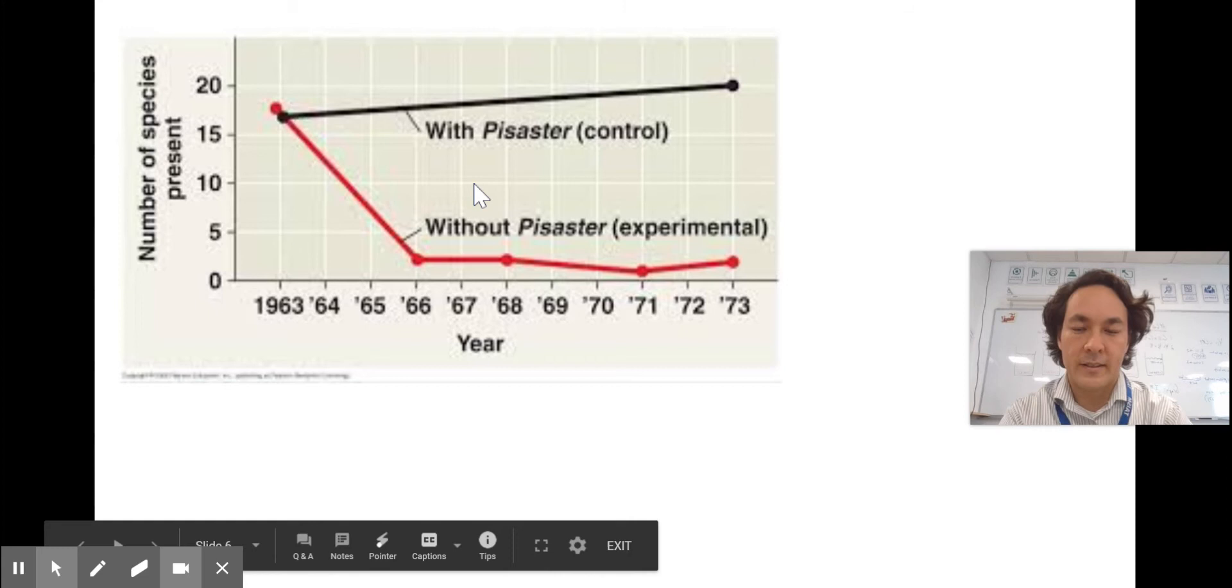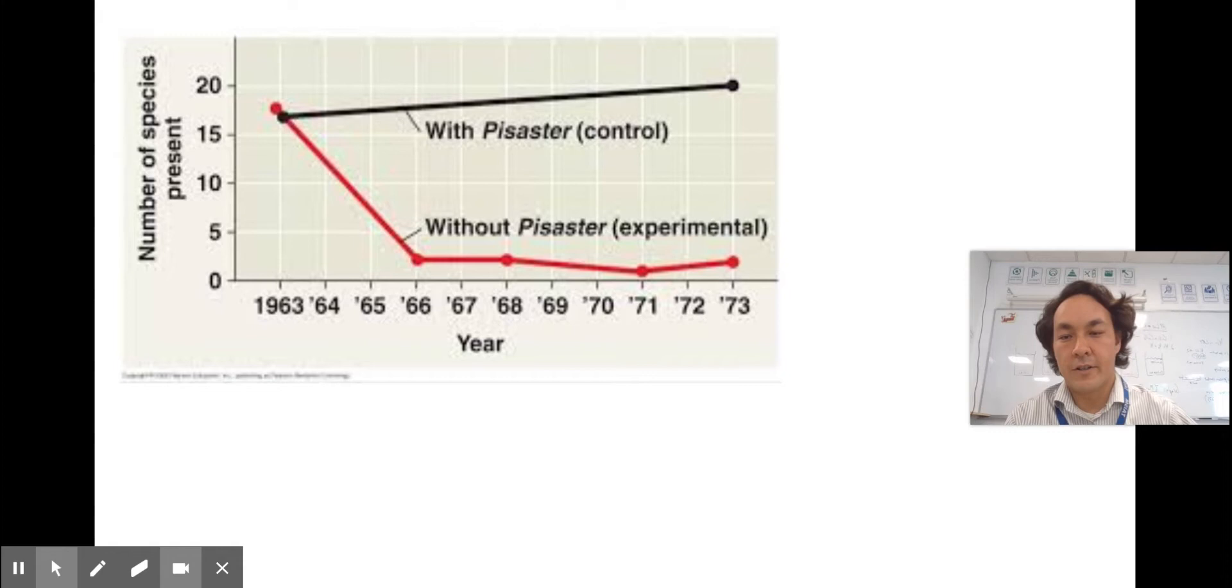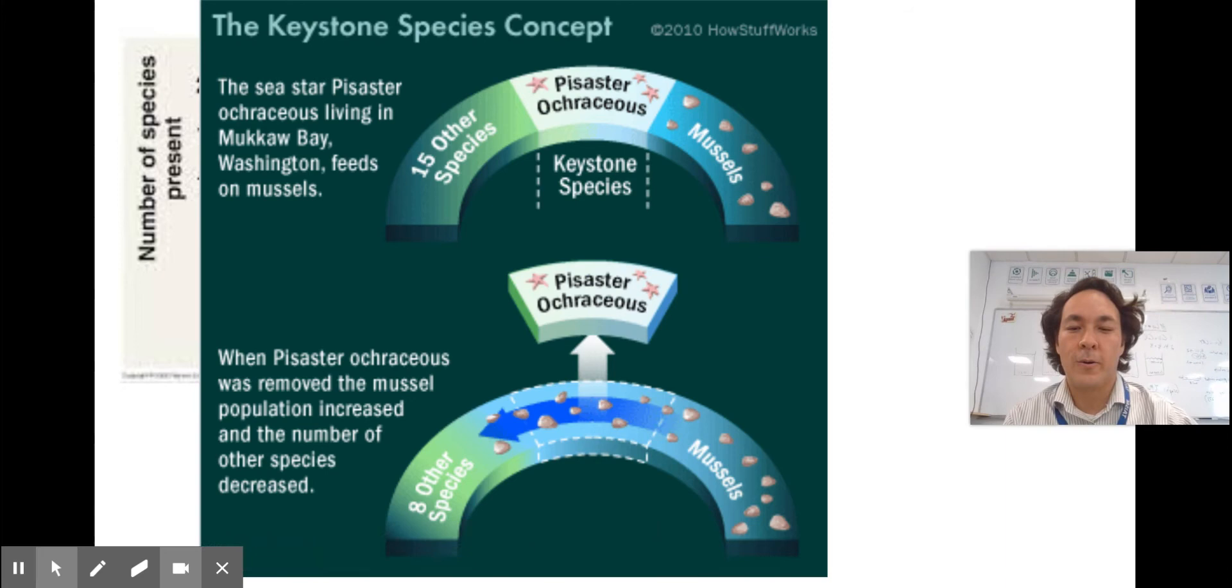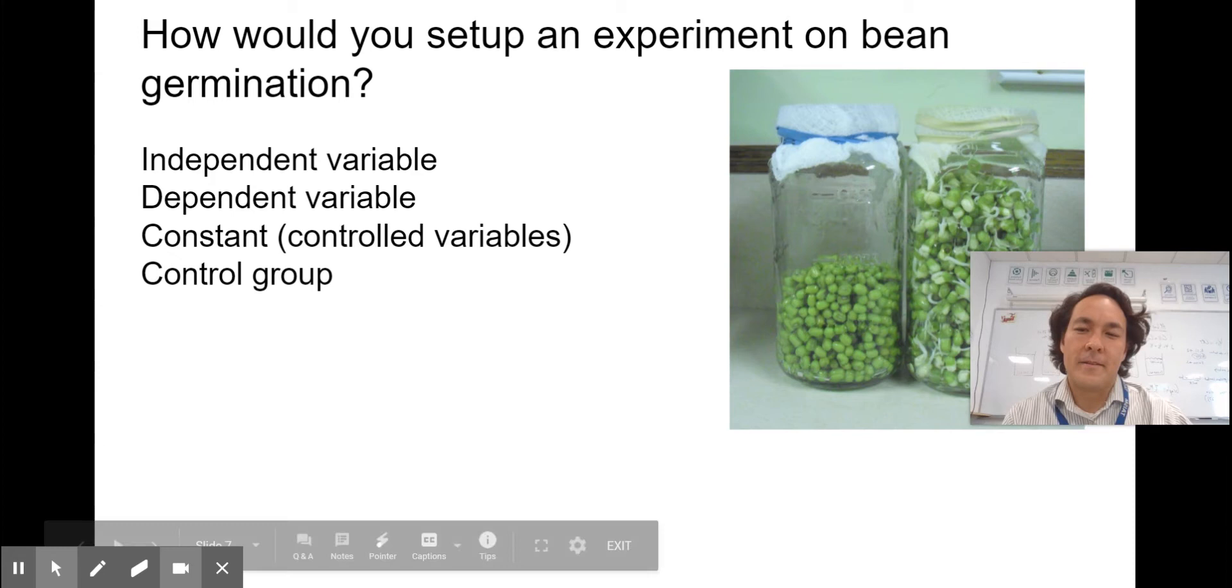Without the starfish controlling some of the other species, the mussels were able to take over. From that, he coined the term a keystone species. Here's a graph to look at. With the starfish, the control group, the number of species hovers around between 17 and 20. Without the starfish, the experimental group, it drastically decreases to one or two.